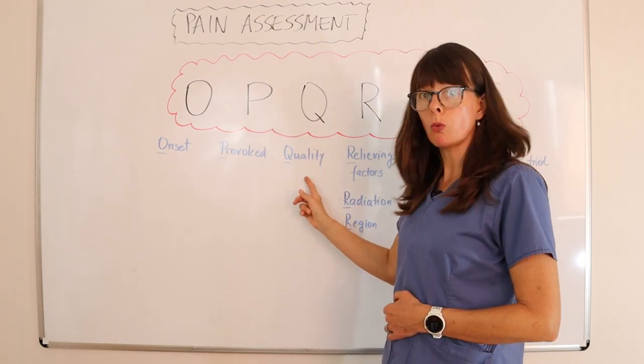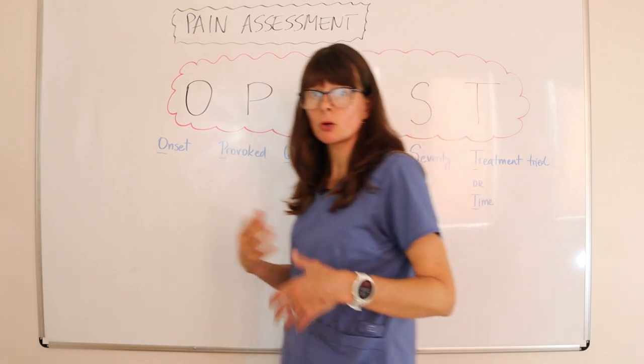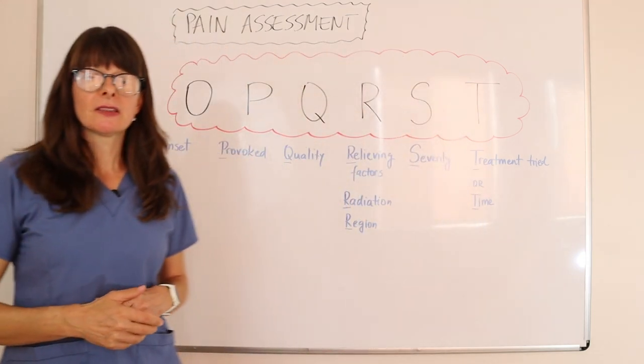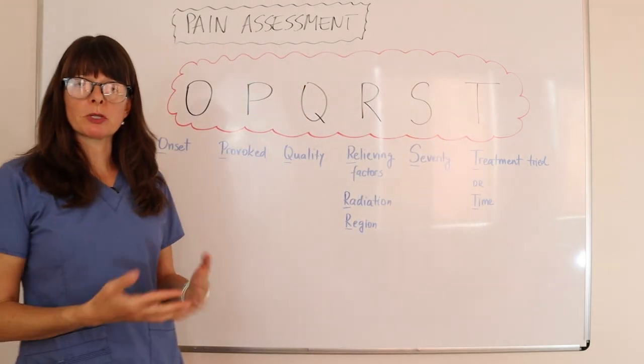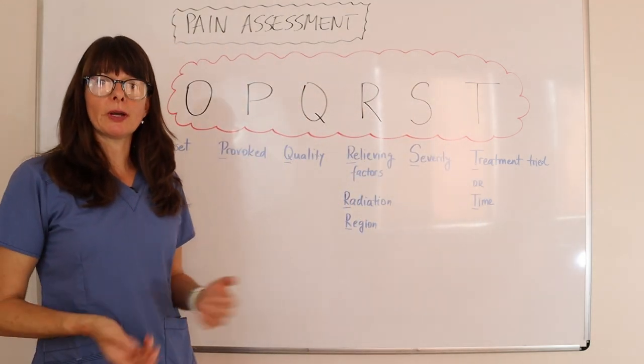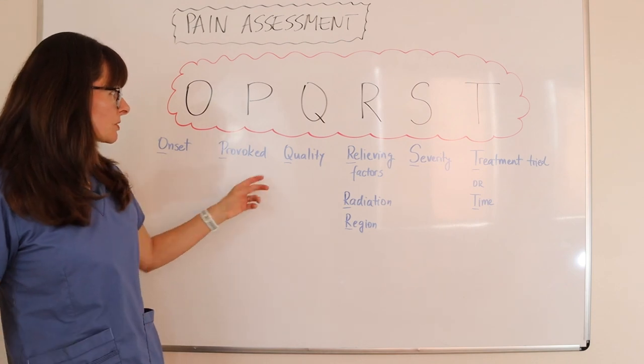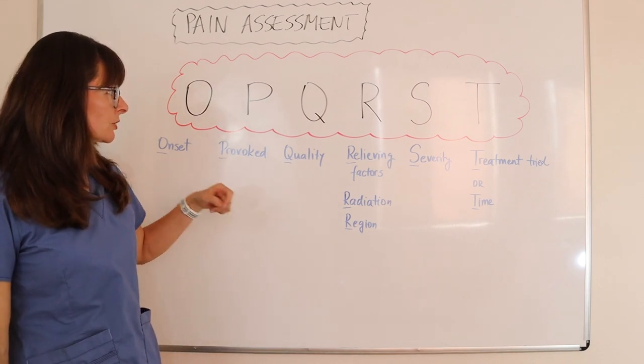Q is quality — what does the pain feel like? This is when you would use descriptors such as sharp, dull, achy, crampy, or any of those describing factors.